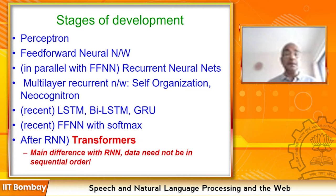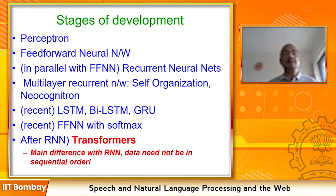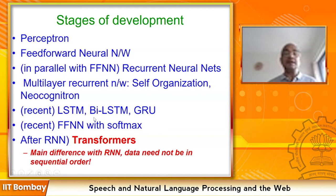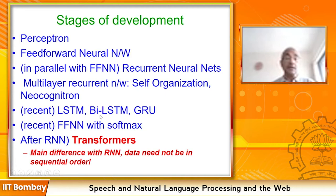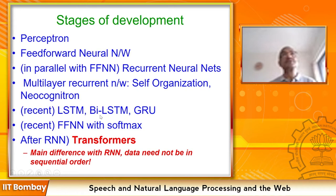Recurrent networks assembled in multiple layers gave rise to frameworks called self-organization and neocognitron. Neocognitron mimics layers of the brain and is very reminiscent of today's deep neural networks — many layers, each feeding into the next. More recently, LSTMs and gated recurrent units have become famous for their problem-solving ability in speech, vision, image processing, NLP, and robotics.